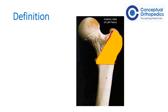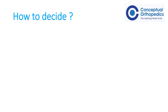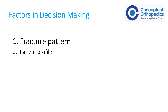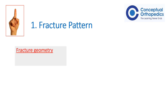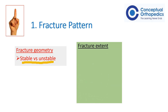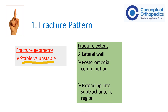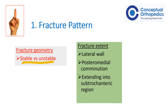The key question is how to decide which treatment option to undertake for which subset of fractures. The decision making is dependent on two parameters: one is the fracture pattern, and the second is the patient profile. For the fracture pattern, we need to assess fracture symmetry — whether the pattern is stable or unstable — and fracture extent, including whether it extends onto the lateral wall, whether there is posteromedial comminution, and whether it extends into the subtrochanteric region.